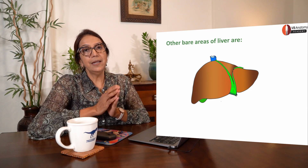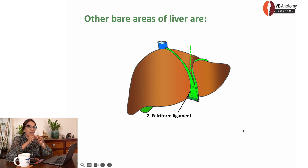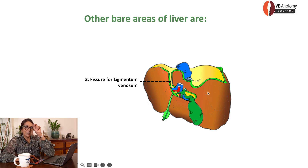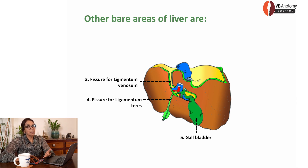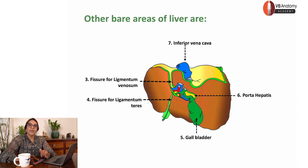We've done the bare area. Let's go to other bare areas. Here is the falciform ligament — you can see how as the two layers diverge, a small bit of liver tissue remains bare. Other bare areas include fissure for ligamentum venosum — you can see a small gap between the two layers — and fissure for ligamentum teres. Pick up the gallbladder — the area below it is again bare. Porta hepatis is obviously not covered by peritoneum but surrounded by the free margin of lesser omentum. And the groove for the inferior vena cava is again a bare area. So these are all the bare areas of liver.